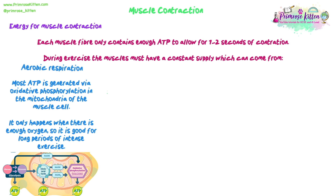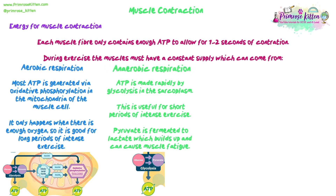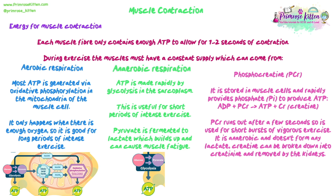Anaerobic respiration also provides ATP — it can be made readily by glycolysis in the sarcoplasm, which is why fast twitch fibres don't need as many mitochondria. This is useful for short periods of intense exercise, giving a quick power boost, but muscles tire after a while because pyruvate is fermented to lactate, which builds up and causes muscle fatigue. So anaerobic respiration can only be sustained for a short time.